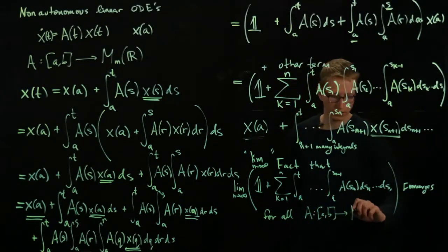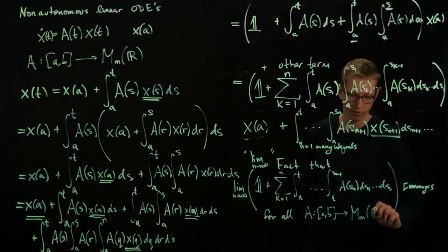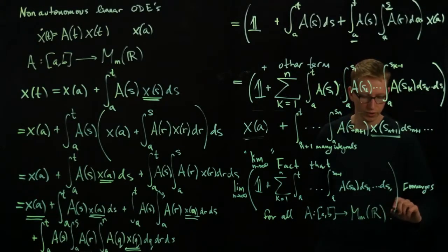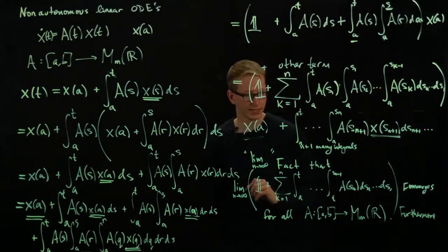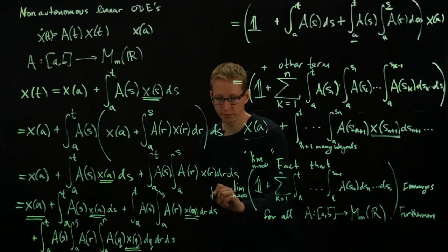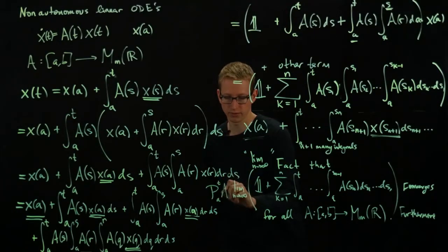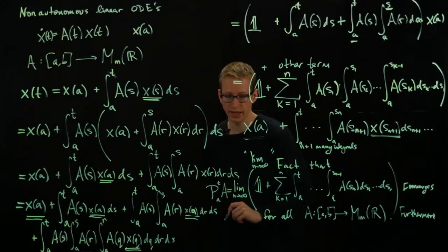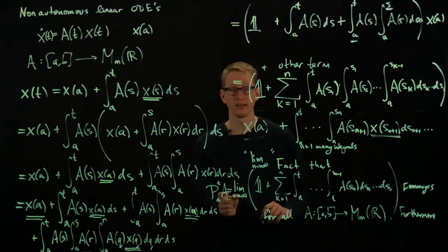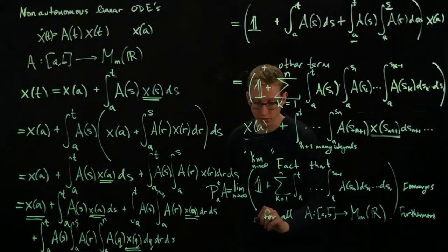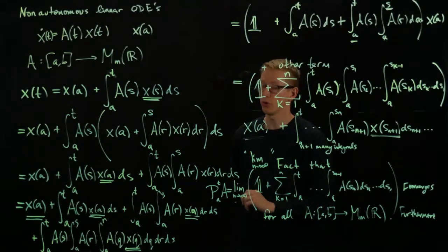And not only does it converge, furthermore, and by the way, since it converges, let's give it a name, let's call it P from a to t of A, of our matrix A. And this is called the time-ordered exponential of A. And furthermore, the solution to our initial ODE is